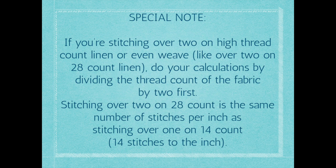So if you're stitching over 2 on high thread count linen or evenweave, this can be a little special. A lot of people on higher thread count fabrics like linens and evenweaves will stitch over 2 — that means instead of stitching over 1 hole in the fabric, you're doing your cross over 2 holes. Linen and evenweave is a really pretty fabric and allows you to do specialty stitches and fractional stitches more easily than Aida. But basically, if you're going to be stitching over 2 — let's say on 28-count fabric, which is quite common — then for your calculations you're going to be assuming you're stitching over 14-count.